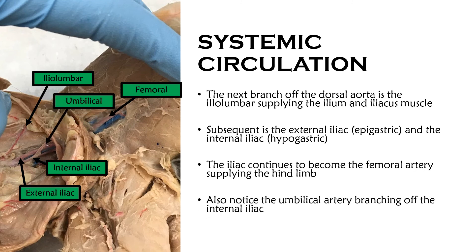Also notice the umbilical artery branching off the internal iliac. If you recall, this artery carries deoxygenated blood from the fetus to the mother, because the fetus cannot oxygenate its own blood and relies on the mother. Deoxygenated blood flows through the umbilical artery to the mother, and once the mother oxygenates it, it gets sent back through the umbilical vein.